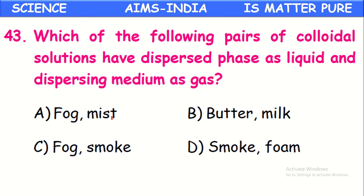Which of the following pairs of colloidal solutions have dispersed phase as liquid and dispersive medium as gas? The dispersed phase should be liquid and the dispersive medium should be gas — this is the case of fog and mist. These contain liquid particles with gas as the dispersive medium.